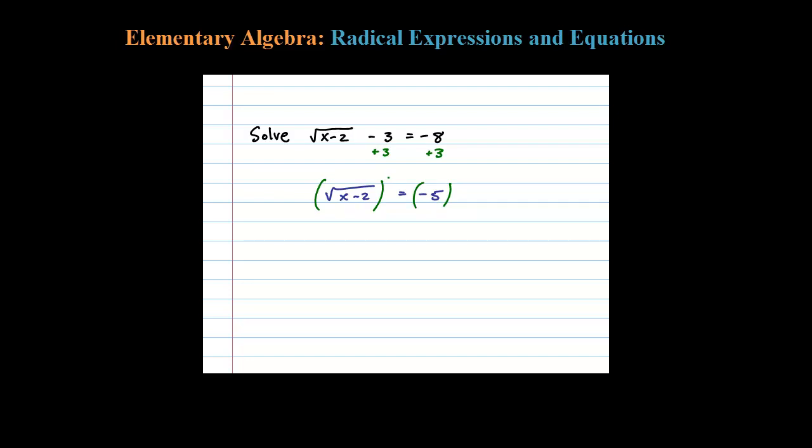Since this is a square root, I'm going to square both sides. When you square a square root, you're just left with the argument. So X minus 2 equals 25. Then adding 2, X equals 27.